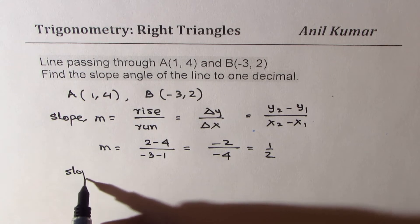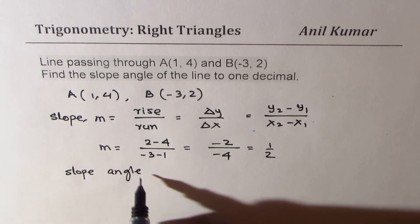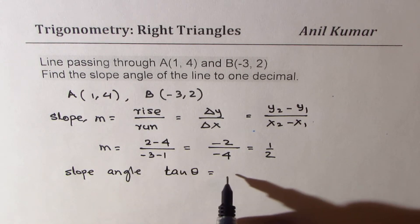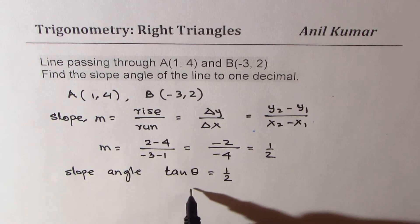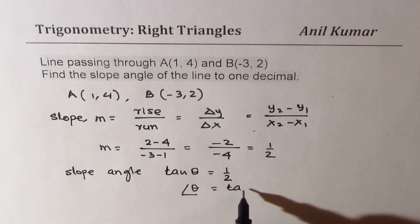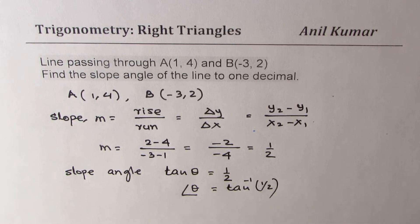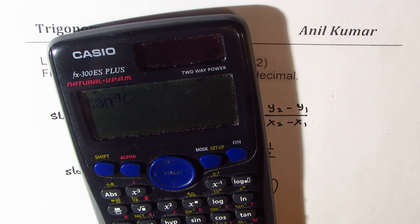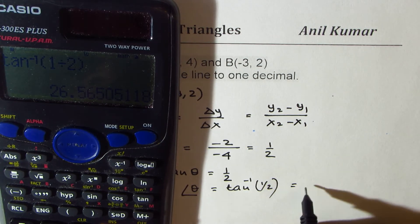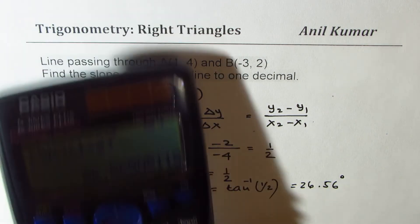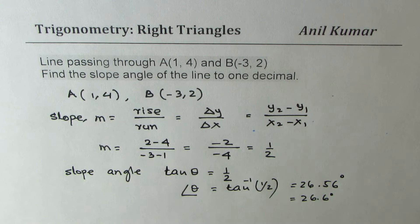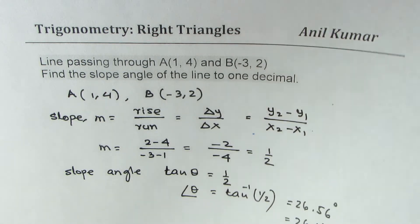Now slope angle, as you know, is tan of this value. So tan theta should be equal to this slope m which is 1/2. From here you get the angle theta should be equal to tan inverse of 1/2. Let's use the calculator and find this answer. This time we have tan inverse of 1 divided by 2, or 0.5, and we get 26.56. Rounding to one decimal place will give us 26.6 degrees. So find slope from the given conditions and then the angle.